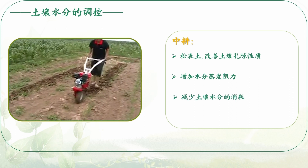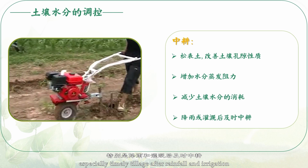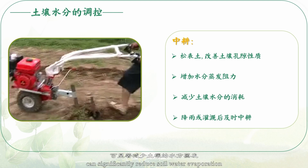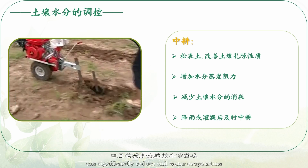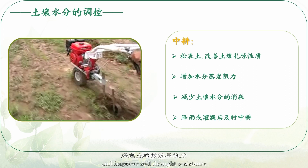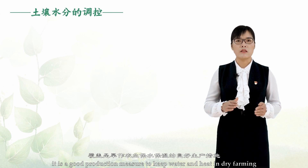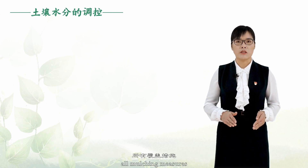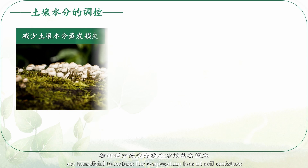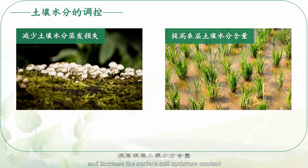6. Especially timely tillage after rainfall and irrigation can significantly reduce soil water evaporation and improve soil drought resistance — a good production measure to keep water and heat in dry farming. 7. All mulching measures are beneficial to reduce the evaporation loss of soil moisture and increase the surface soil moisture content.